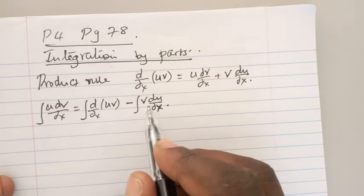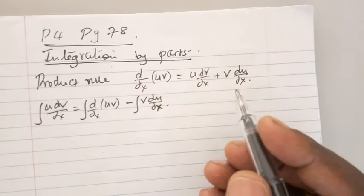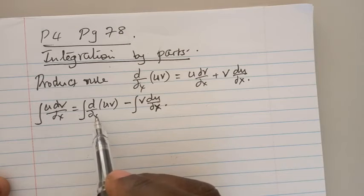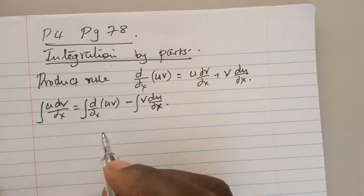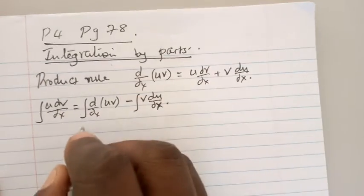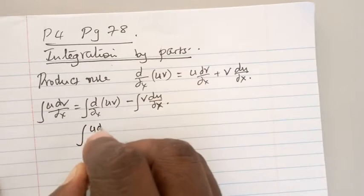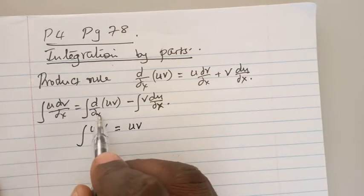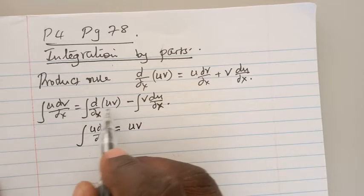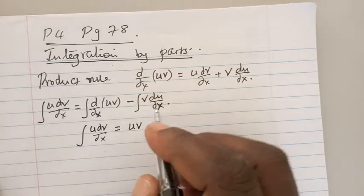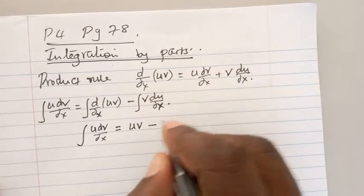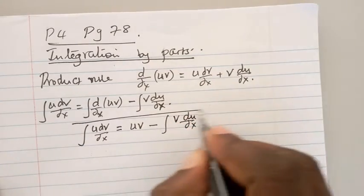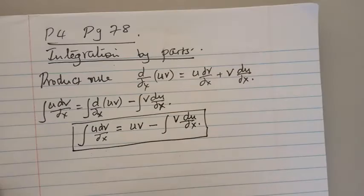It goes without saying that the integral of u dv/dx equals uv, because the integral of a differential takes you back to the original term, minus the integral of v du/dx. And this is now what we are calling integration by parts.